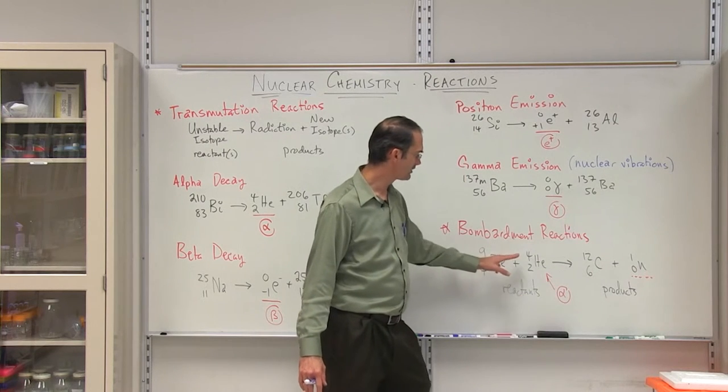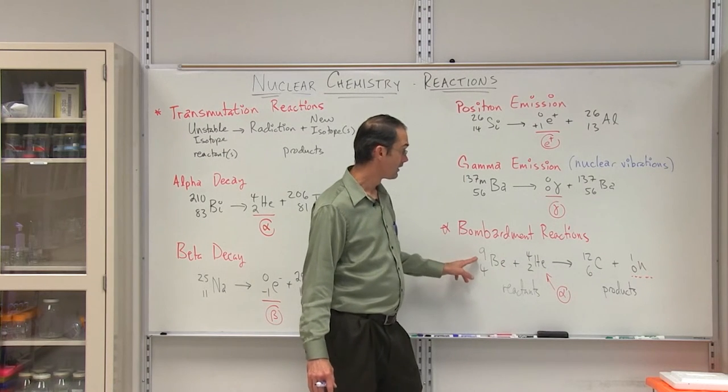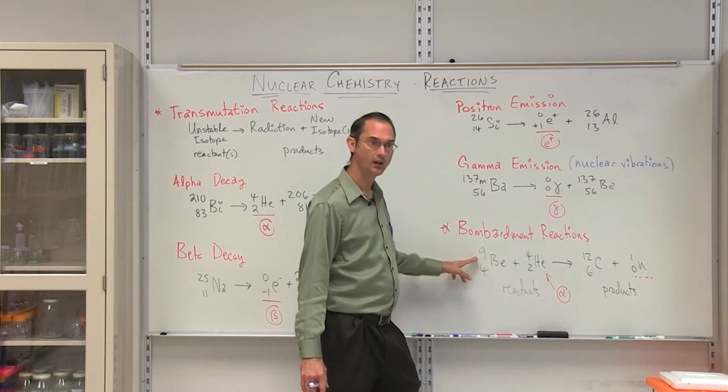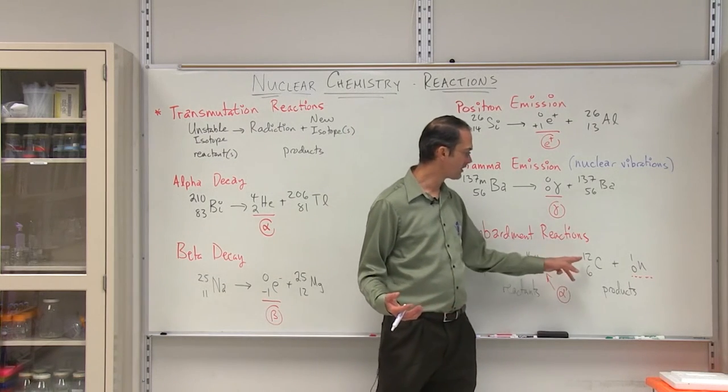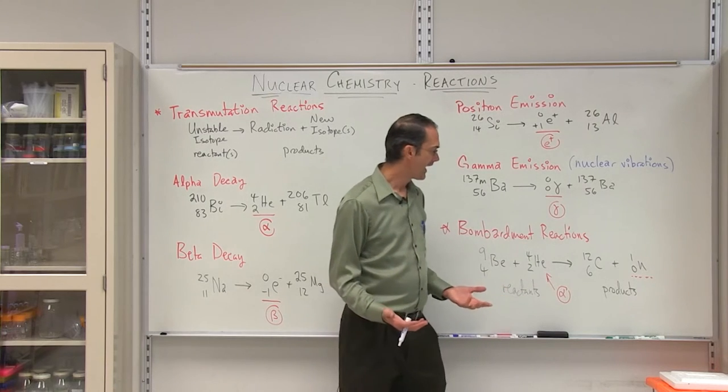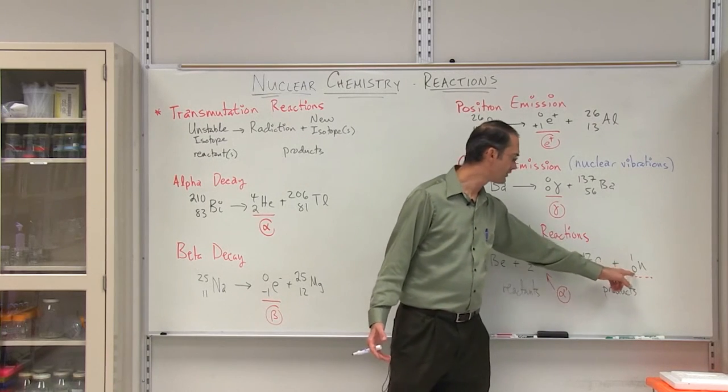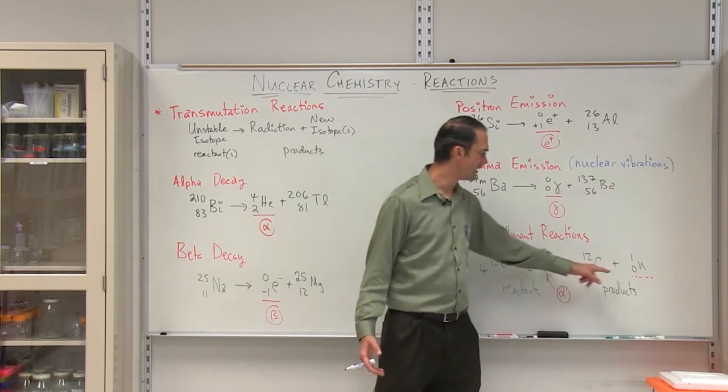And if we have a nine plus four, we have a total of 13 nucleons, protons and neutrons. And if we have 13, and the carbon has 12, we've got one left over. And that one left over has to have a charge of zero to balance our equation. And in that case, this is a neutron.